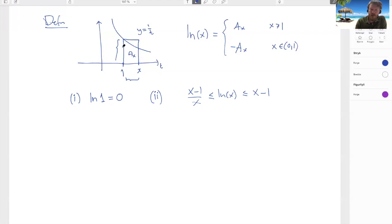Well, if I'm at the point 1 and I go up to the graph of 1 over t, I get to the height 1. And here I'm moving between 1 and x. So the area of this box is exactly that. And then I have the upper inequality.